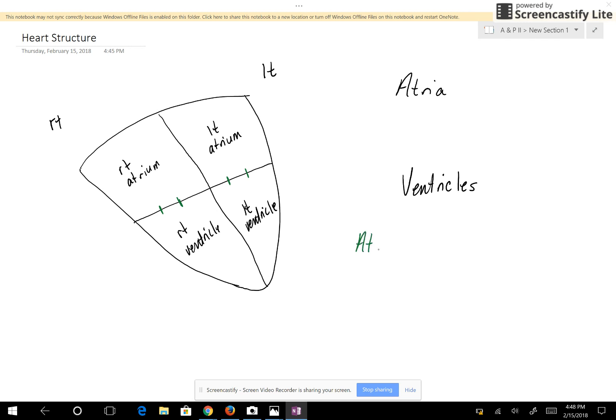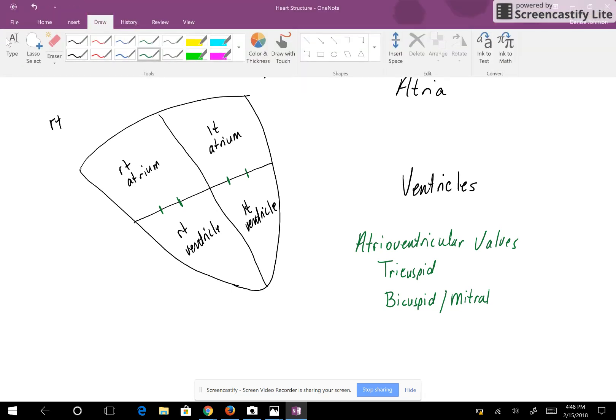The names of them are the tricuspid valve and the bicuspid valve. The bicuspid valve is also known as the mitral valve.